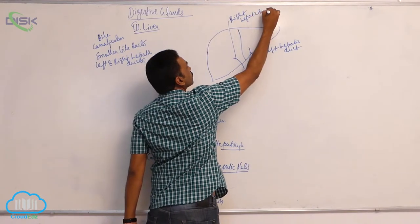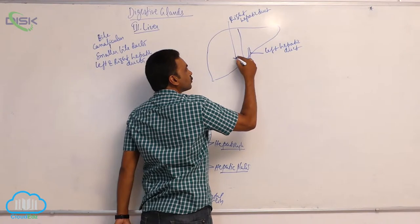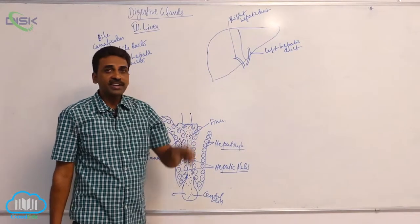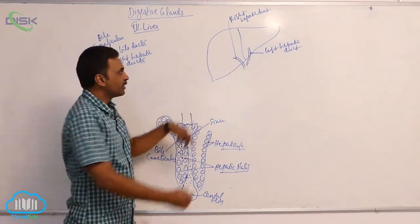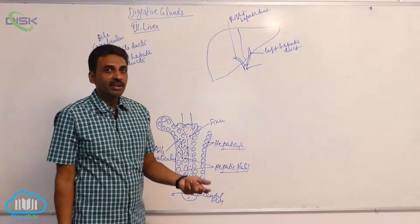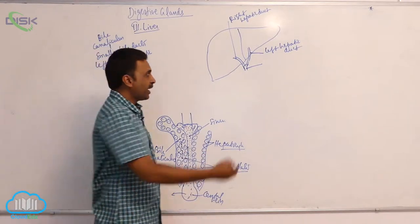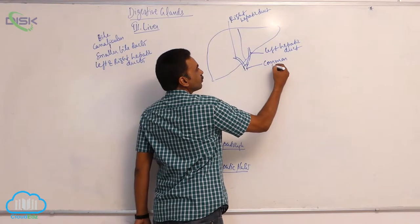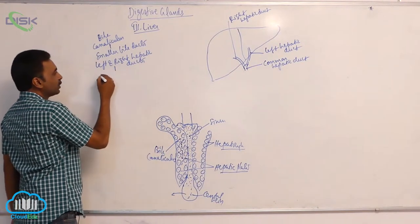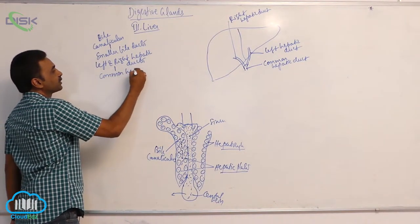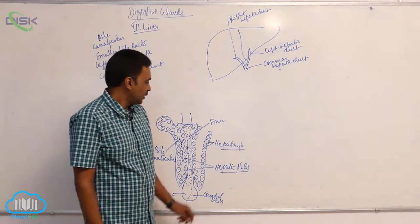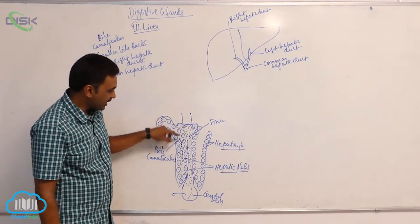From each lobe, one hepatic duct originates, and both of them combine together. After they combine together, it is called the common hepatic duct.